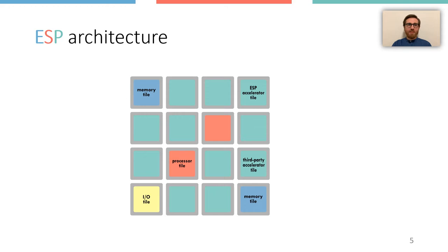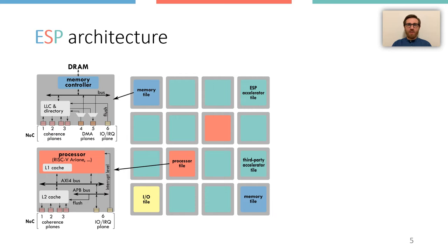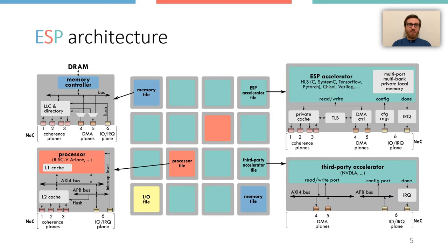ESP combines a scalable architecture with a flexible methodology. The ESP architecture is structured as a tile grid. There are four main types of tiles: processor tiles, memory tiles for the communication with main memory, accelerator tiles and third-party accelerator tiles.